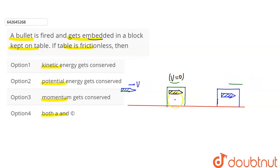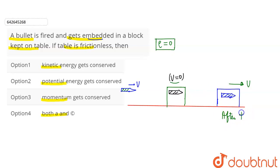After the collision, the block and bullet both move together. So in the after-collision diagram, the block and bullet form one system and both move with a common velocity V, because the bullet has been embedded inside the block. Before the collision, only the bullet was moving; the block was at rest. After the collision, both move together with common velocity V.